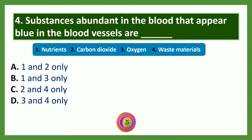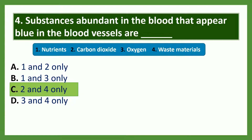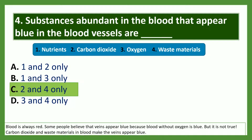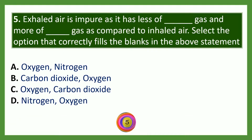Substances abundant in the blood that make blood vessels appear blue are: 1 — nutrients, 2 — carbon dioxide, 3 — oxygen, 4 — waste materials. The answer is option C — carbon dioxide and waste materials. Blood is always red. Some people believe veins appear blue because blood without oxygen is blue, but that is not true. Carbon dioxide and waste materials in blood make the veins appear blue.